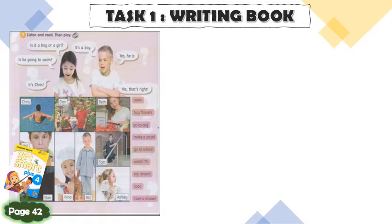Look at this activity. It's your first one, and I want you to write this in your writing book. Let's read first. Is it a boy or a girl? It's a boy. 'Is he going to swim? Yes, he is.' Maybe you can play this with someone around you — try to guess which one. But for today I want you to do the writing activity. I want you to ask questions about each picture.